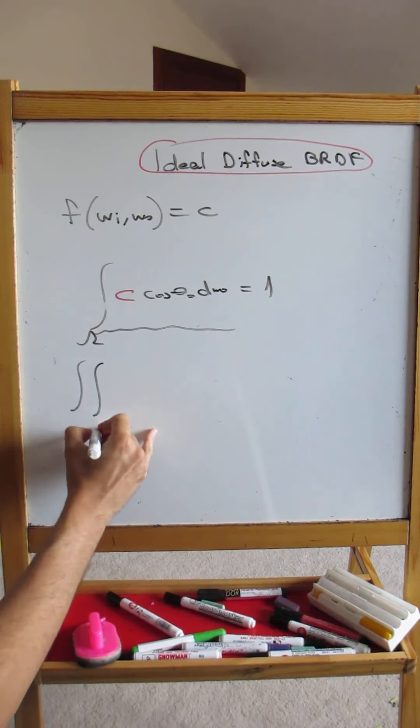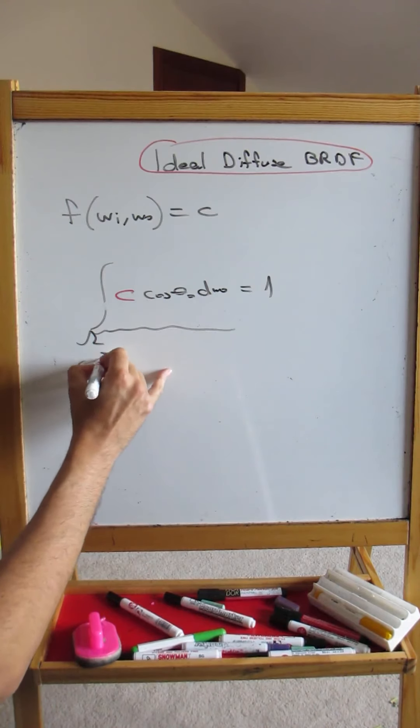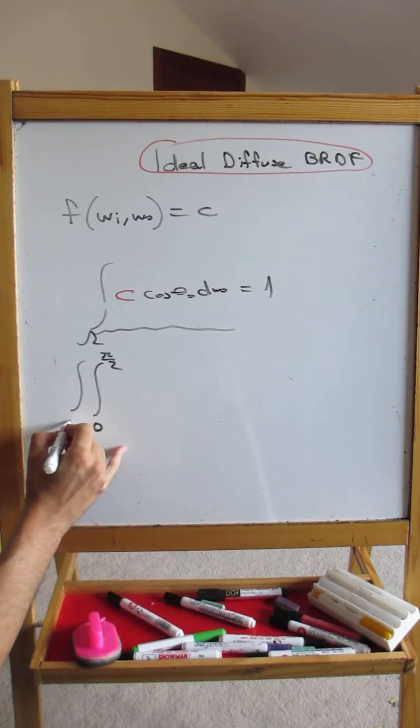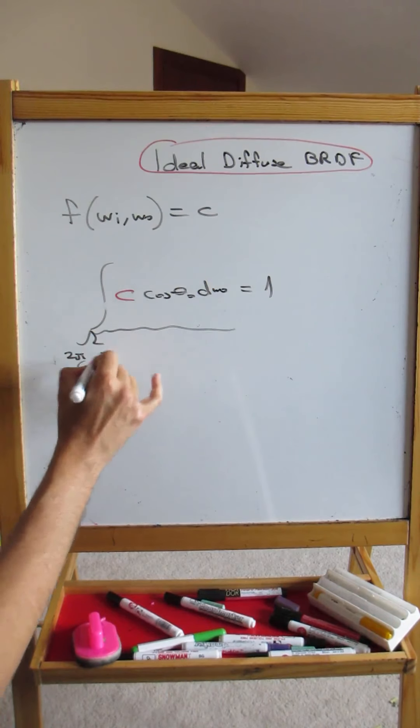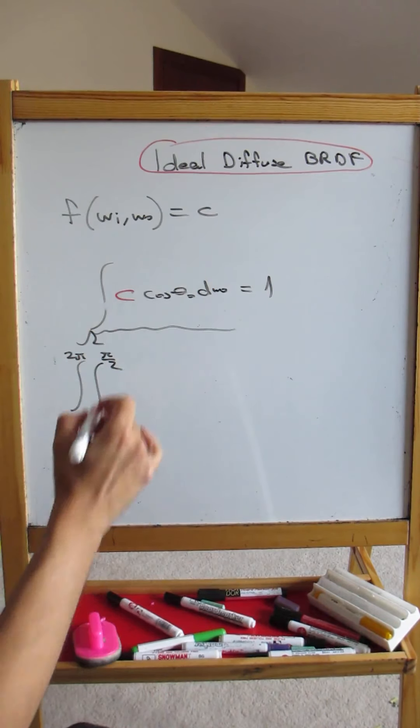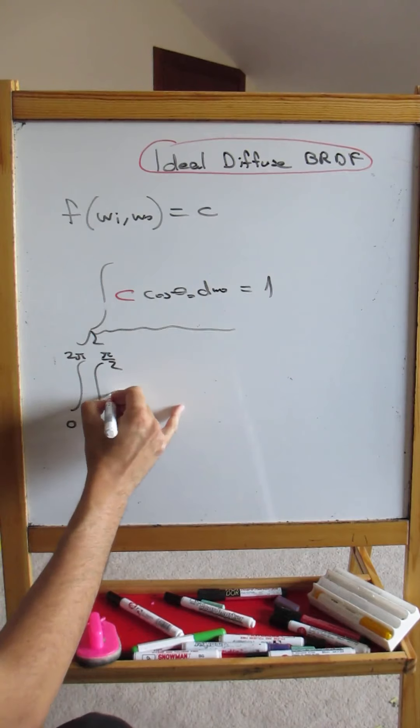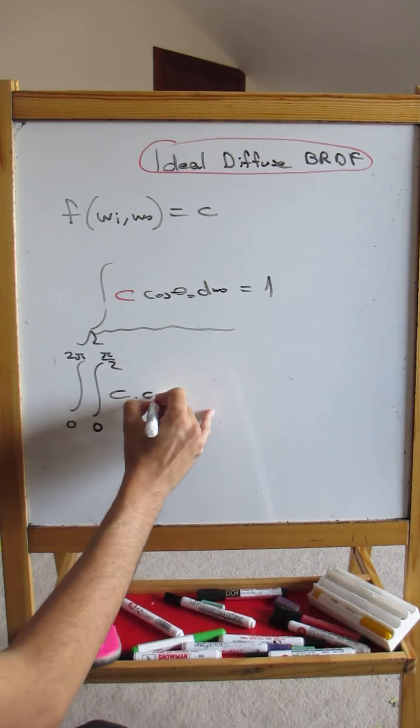To actually evaluate this, we cannot really evaluate it in this form. We will convert it to theta phi representation. So theta from 0 to pi over 2 and phi from 0 to 2 pi.